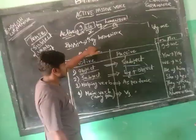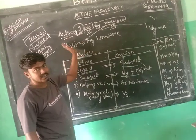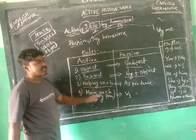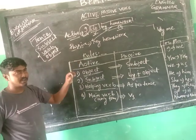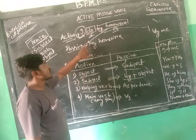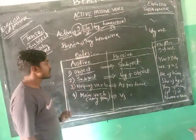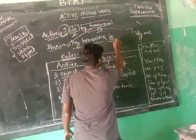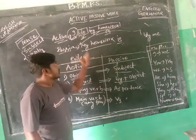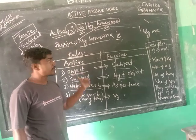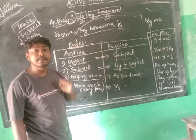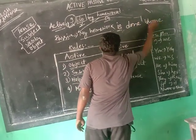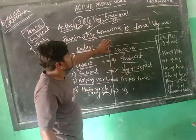First, the object will change to subject; then the subject will change to by-class object. Then we have to use the helping verb, which changes according to the tense. For simple present tense, 'is/am/are' will come as the helping verb. Since 'my homework' is third person singular, we use 'is'. Then the main verb changes to its third form — the past participle. 'Do' becomes 'done'. So the final sentence is: 'My homework is done by me.'